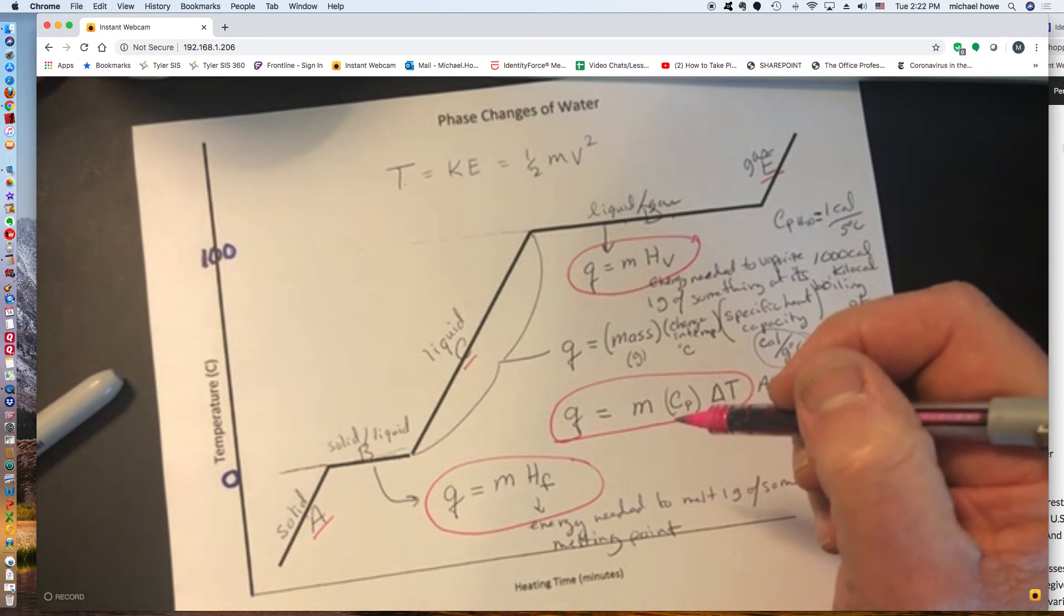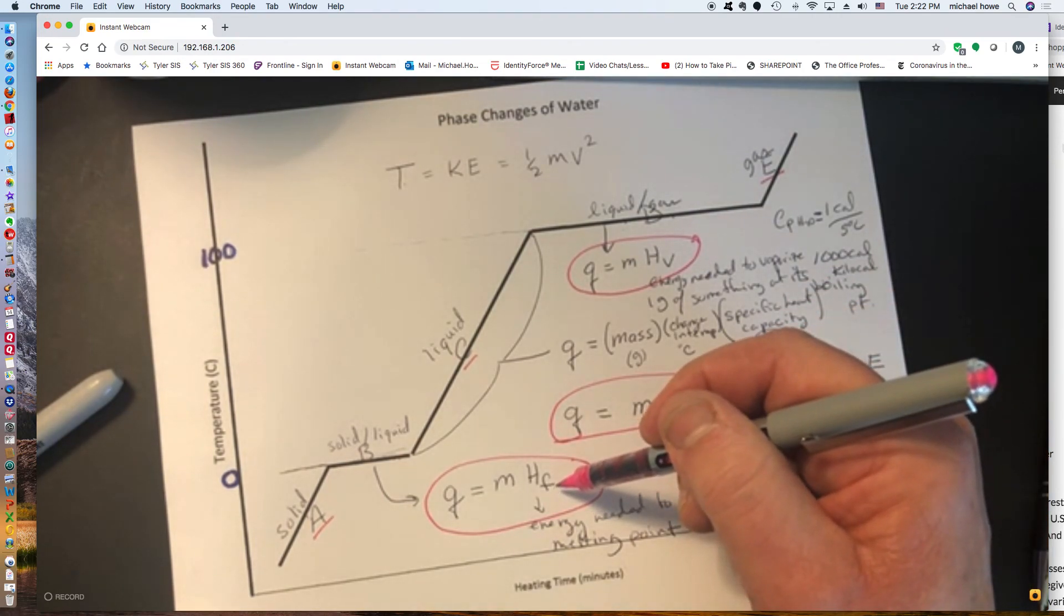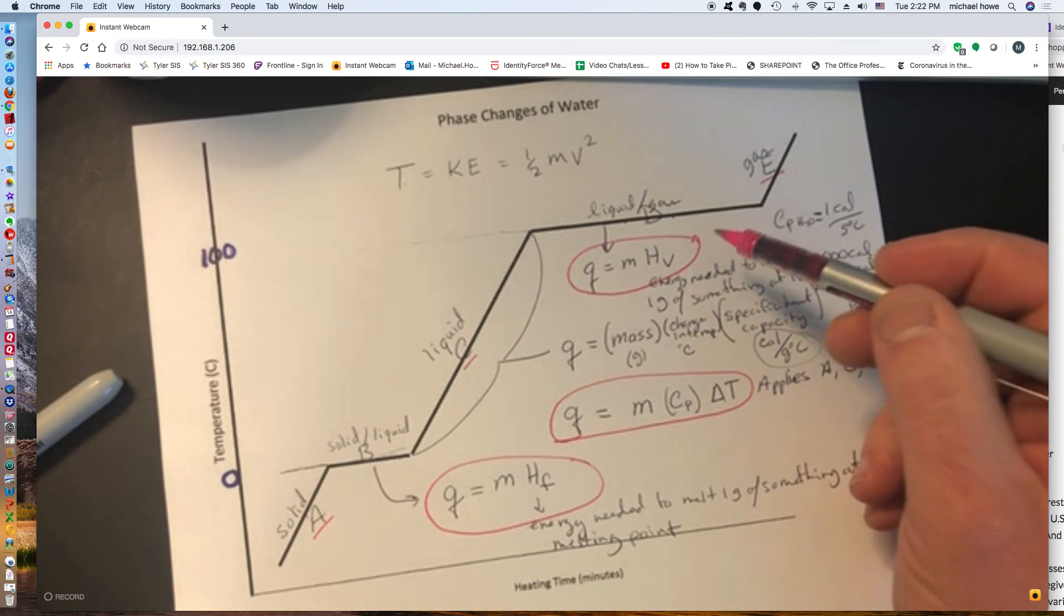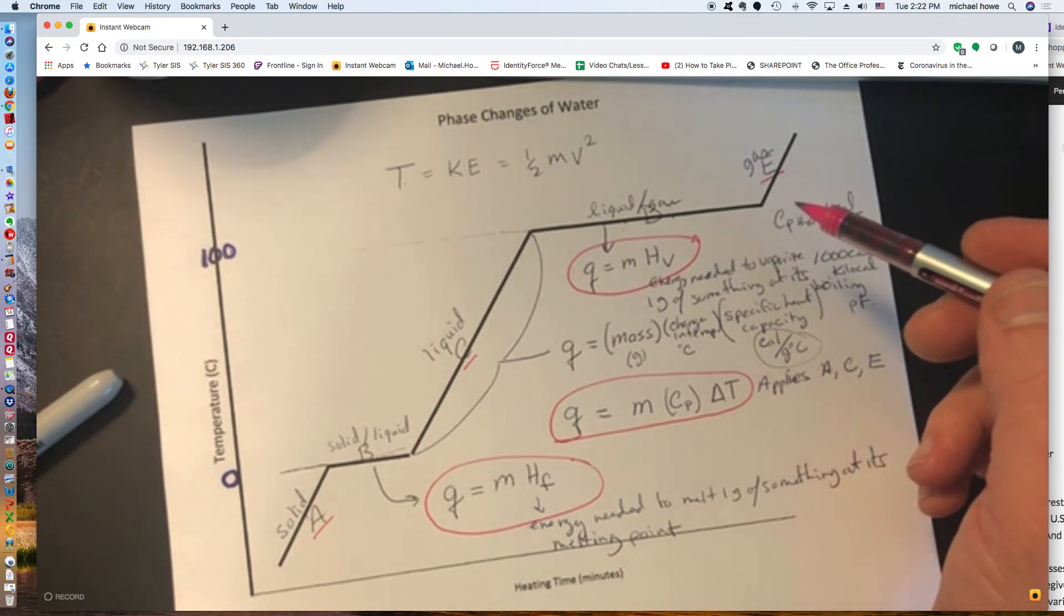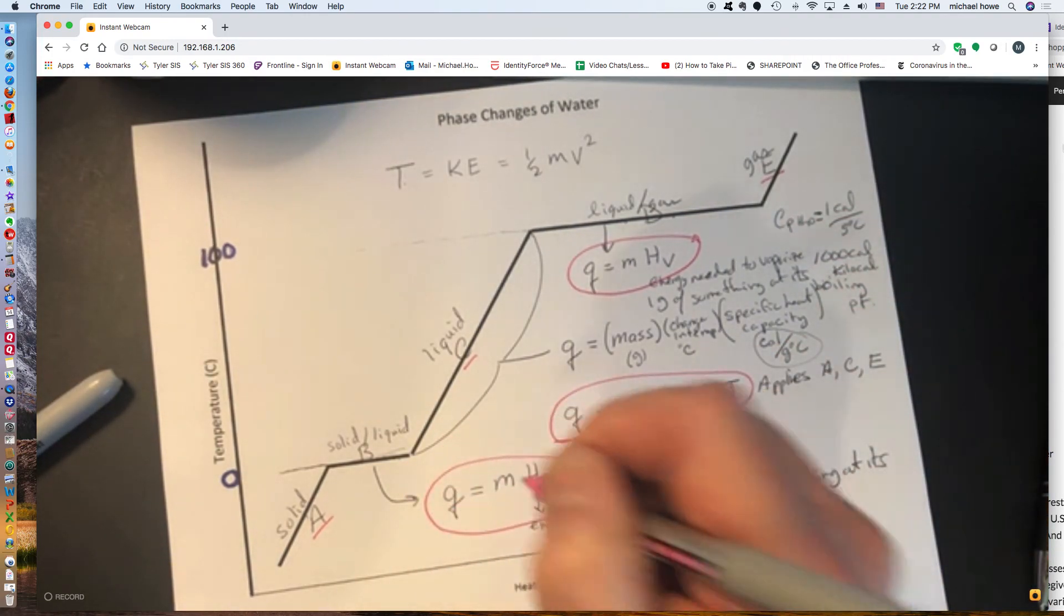So three formulas. The first formula for changing temperature, heat of fusion formula for melting, and the heat of vaporization formula for boiling. What's coming is calculations using these formulas.